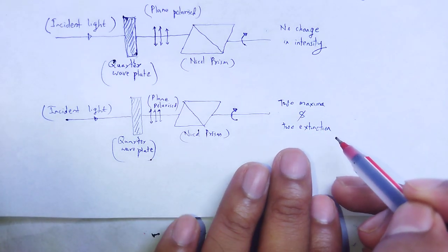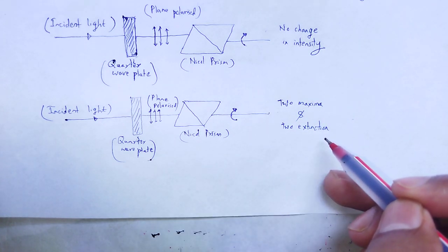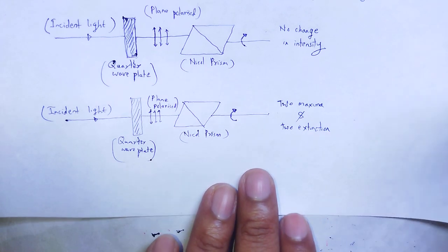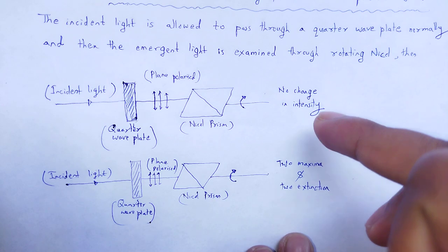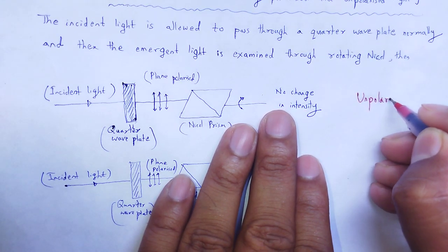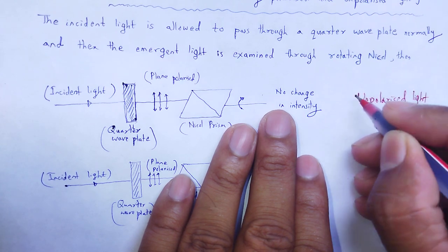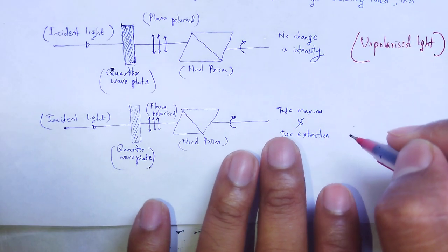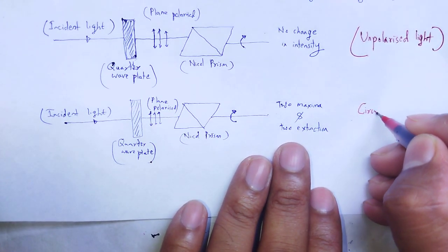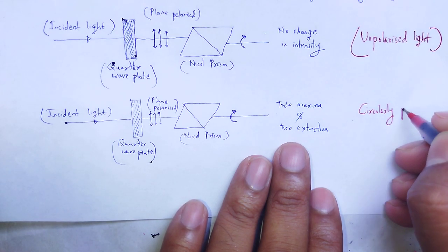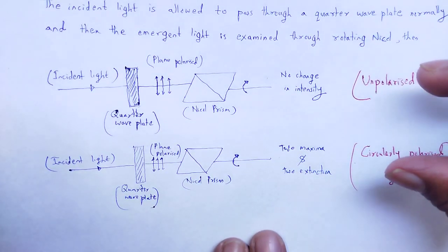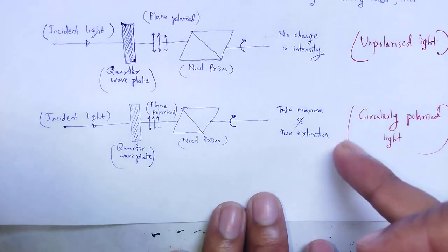Here we see two maxima and two extinctions. Extinctions means the minimum intensity is totally zero. So under full rotation, we see two maxima and two extinctions. When we observe no change in intensity, then that situation is called unpolarized light. When we see variation of intensity as two maxima and two extinctions, it is called circularly polarized light. In this way, we can easily detect whether the light is unpolarized or circularly polarized.